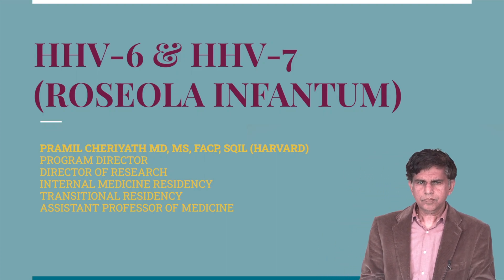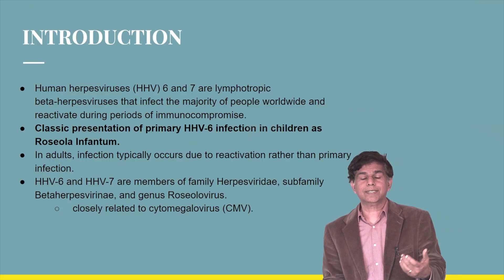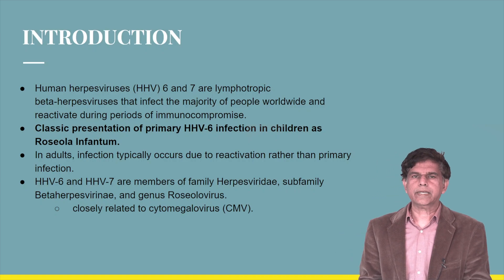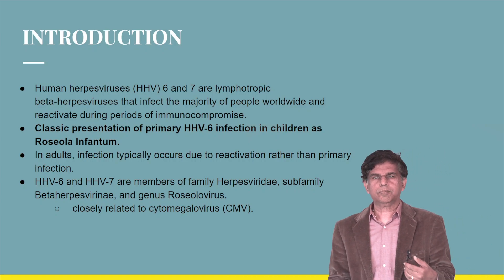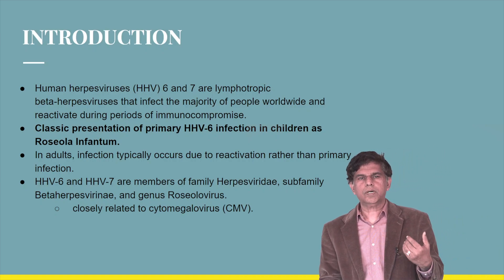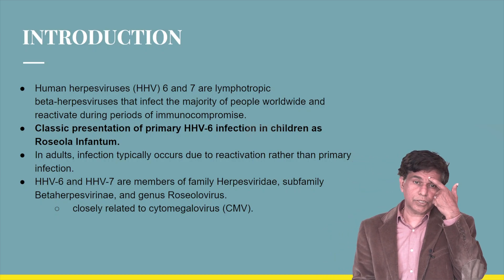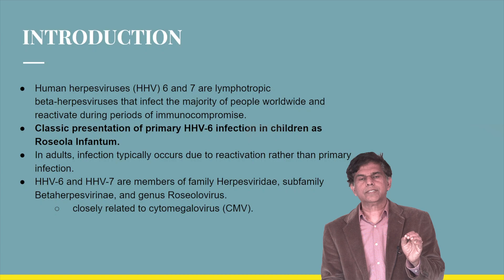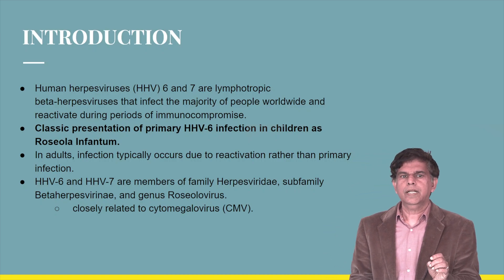Human herpes virus HHV-6 and HHV-7 belong to the family Herpesviridae. We've had presentations about HHV-1, 2, 3, and 4, so today we're going to focus on HHV-6. Infection in children is known as Roseola Infantum.